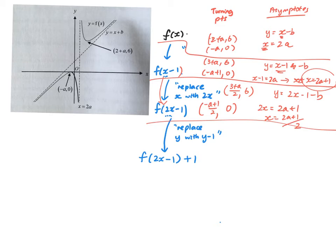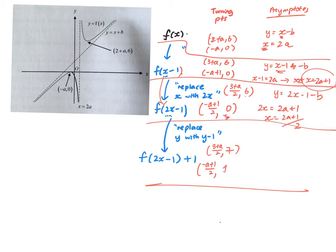Last, replacing y with y minus 1 because we are doing 2f(2x minus 1) plus 1. The x coordinate is not affected. 6 becomes 7, and 0 becomes 1. For the oblique asymptote y equals 2x minus 1 minus b, replacing y with y minus 1 gives us, after canceling the minus 1 and plus 1, the asymptote y equals 2x plus b. The vertical asymptote x equals (2a plus 1) over 2 is not affected at all.